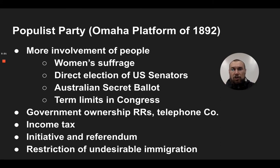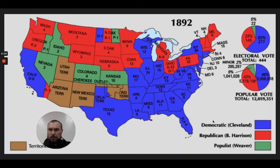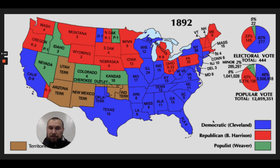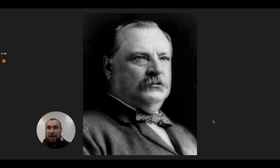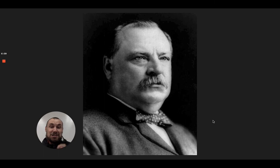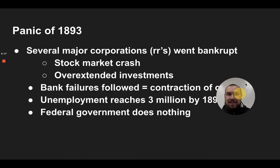The party continued to grow through 1892, really hitting a high point in the midterm elections of 1894, then basically becoming part of the Democratic Party in 1896. In the presidential election of 1892, you can see a growth in the populist movement — Grover Cleveland won that election. A small fact: Cleveland is one of the only presidents to win non-consecutive terms, and he married in the White House — the only president to do so — a woman who was 21 years old and 27 years younger than him.